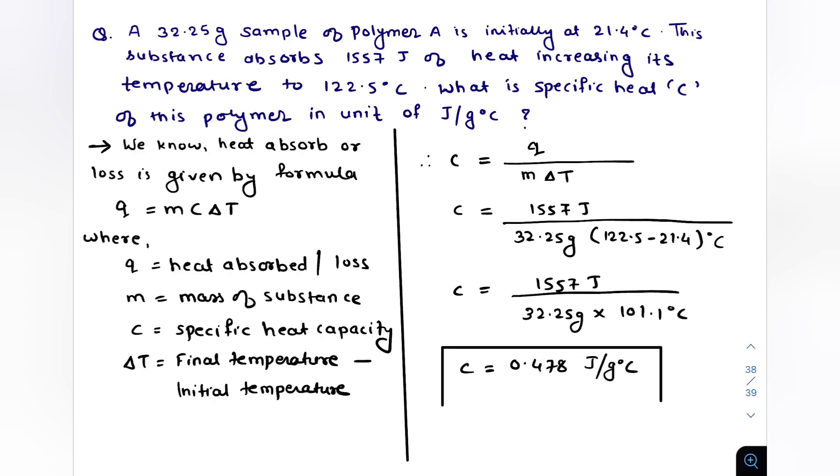So this is our answer which is 0.478 joule per gram degree Celsius, which is the specific heat of the polymer. Thank you for watching this video. If you like the solution hit the like button and subscribe my channel for next question. Thank you.